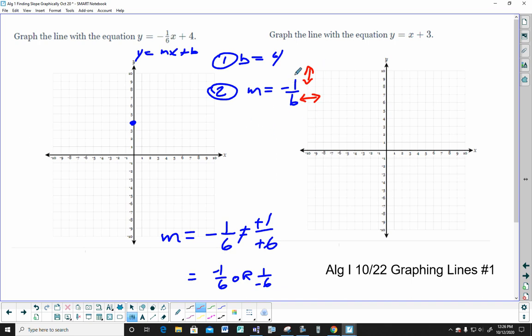So, if I go, if I have a rise of negative 1, that means I go down 1 and then right 6. 1, 2, 3, 4, 5, 6 because it's a positive 6. If I use the definition of slope where it's a 1 over negative 6, you would go up 1, back 6. But you see it lands on the same line. It forms the same line.